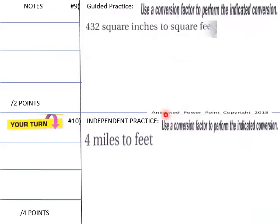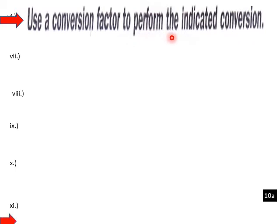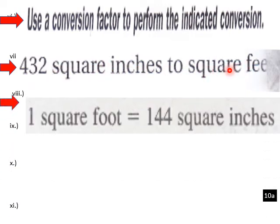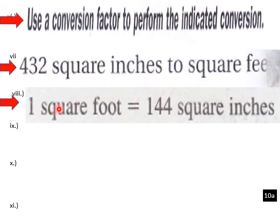Let's try one: use a conversion factor to perform the indicated conversion. We want to convert 432 square inches to square feet. One square foot equals 144 square inches, so we build our conversion factors from that relationship.